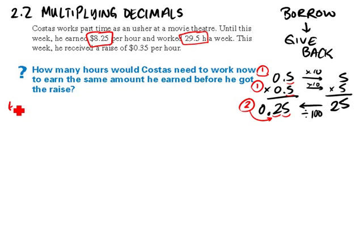So let's estimate first just so that we can predict what our answer should be around. Well $8.25 is about $8 an hour and 29 hours a week is about 30 hours. So $8 an hour times 30 hours. I cancel out the hours so I'm left with 8 times 30 is $240. So I should have approximately $240.